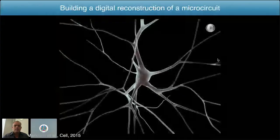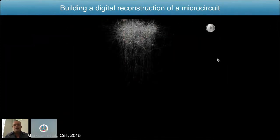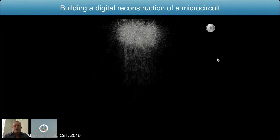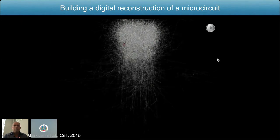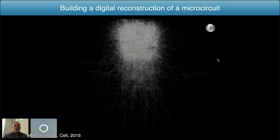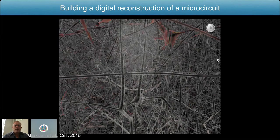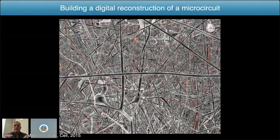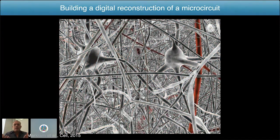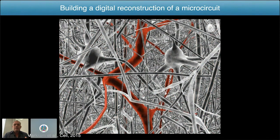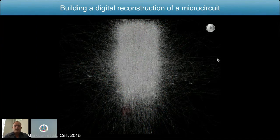We used a data-driven digital reconstruction process to build a microcircuit by placing those different building blocks — those three-dimensional neuron morphologies — according to the statistics, into the volume of the microcircuit. Part of what this is doing is building a physical scaffold in three dimensions of where and how these different neuron types can actually form potential synaptic connectivity between the cells.